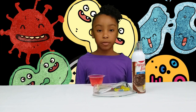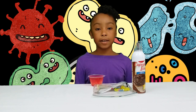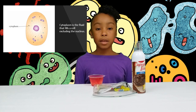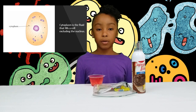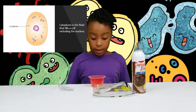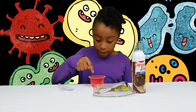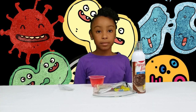The second part we'll be talking about is the cytoplasm. The cytoplasm is a liquid that fills the cell without the nucleus. As you see, the jello is the cytoplasm.